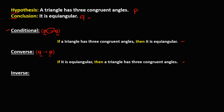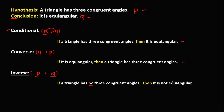For the inverse, that's the negation of P implies the negation of Q. So for the negation of P: if a triangle has no three congruent angles, then for the negation of Q: it is not equiangular. So this is now the inverse of this conditional statement.